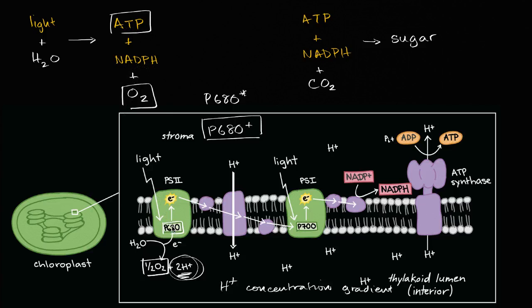Well, we started our process in photosystem II. You might say, why is it called photosystem II if that's where we start? Well, it's actually because that's the second photosystem to be discovered. You might say, what is a photosystem?